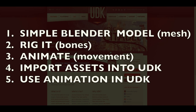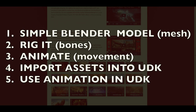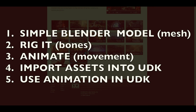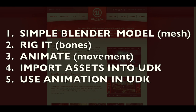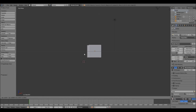What I want to show you today is how you can: one, create a very simple model in Blender comprised of more than one object; two, rig it; three, create an animation for it; four, import it into UDK; and then five, play the associated animation in UDK. First of all, I'm going to create two objects by duplicating this cube by pressing Shift+D.